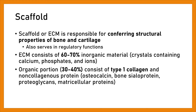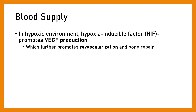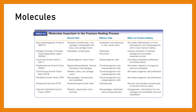Blood supply: In a hypoxic environment, hypoxia-inducible factor (HIF-1) promotes VEGF production, which further promotes prevascularization and bone repair. There are several molecules that require detailed explanation of their mechanism of action, given their clinical applications or future potential as targets to improve fracture healing and treat non-union fractures.